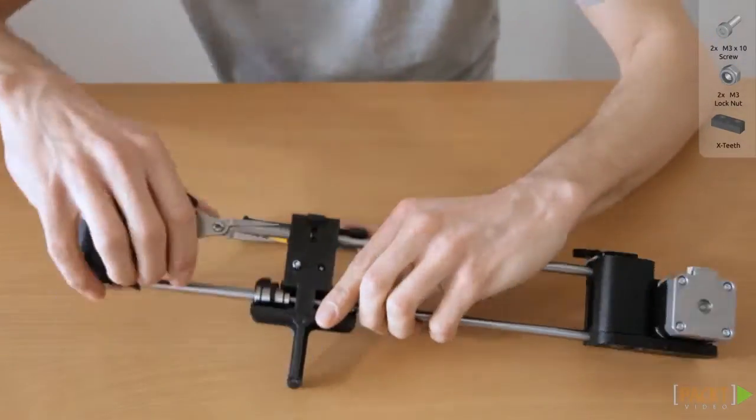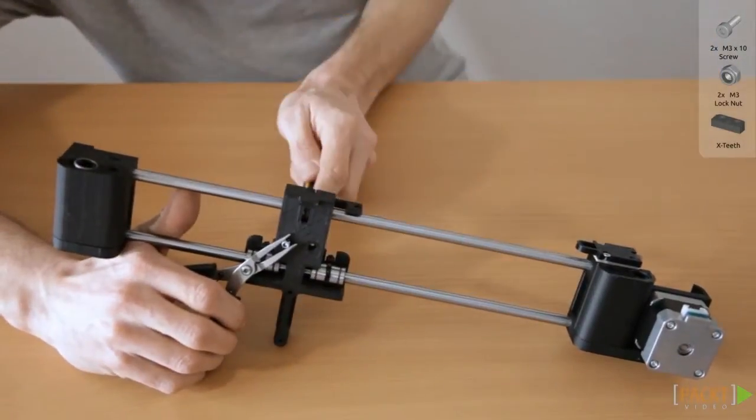Premount two M3 lock nuts into the X-carriage by pulling them in with an M3 screw.